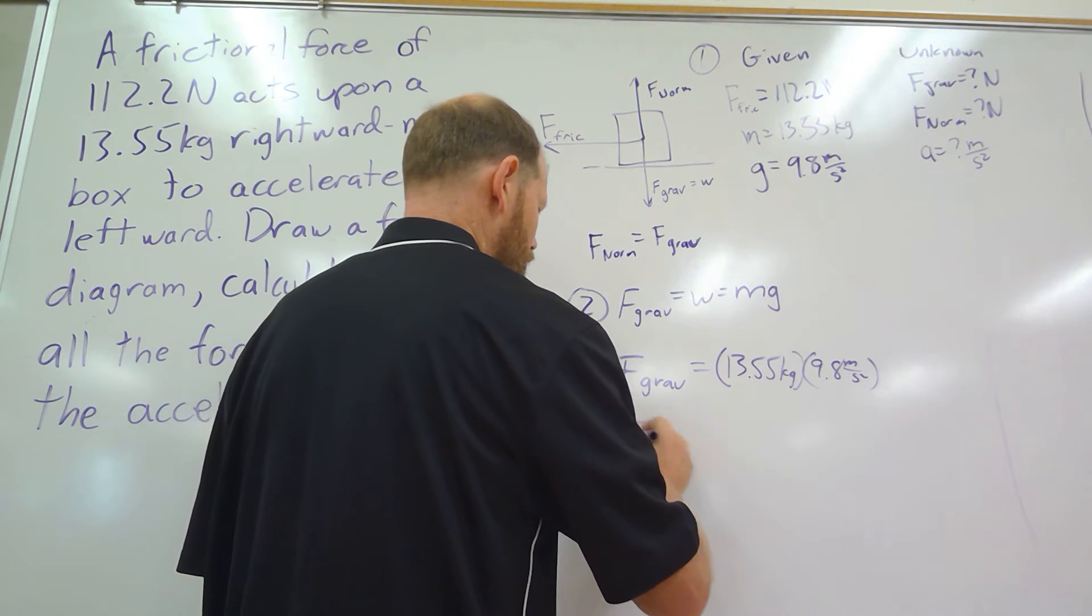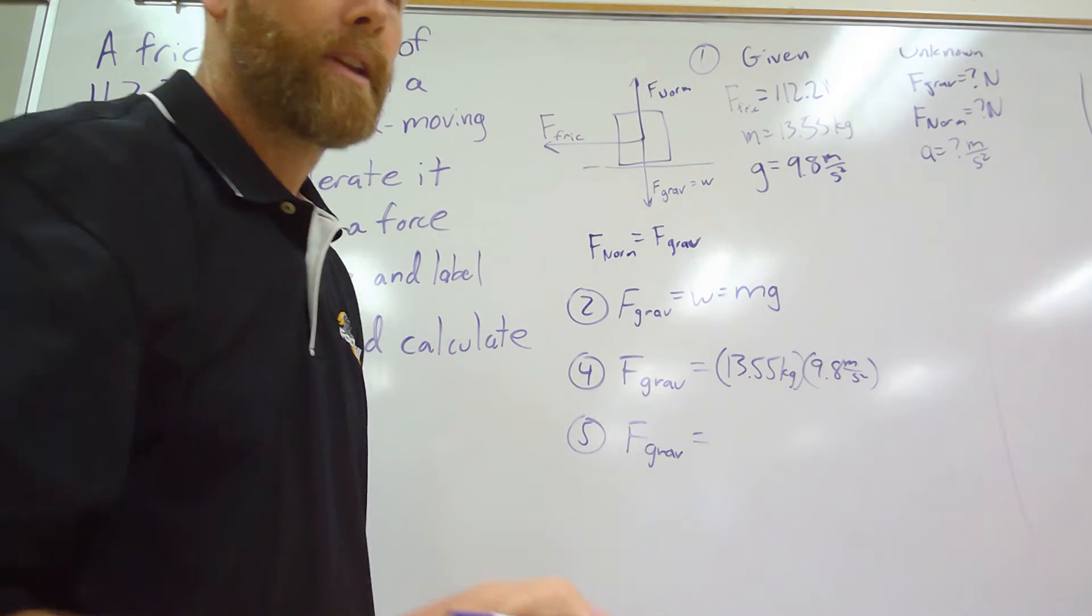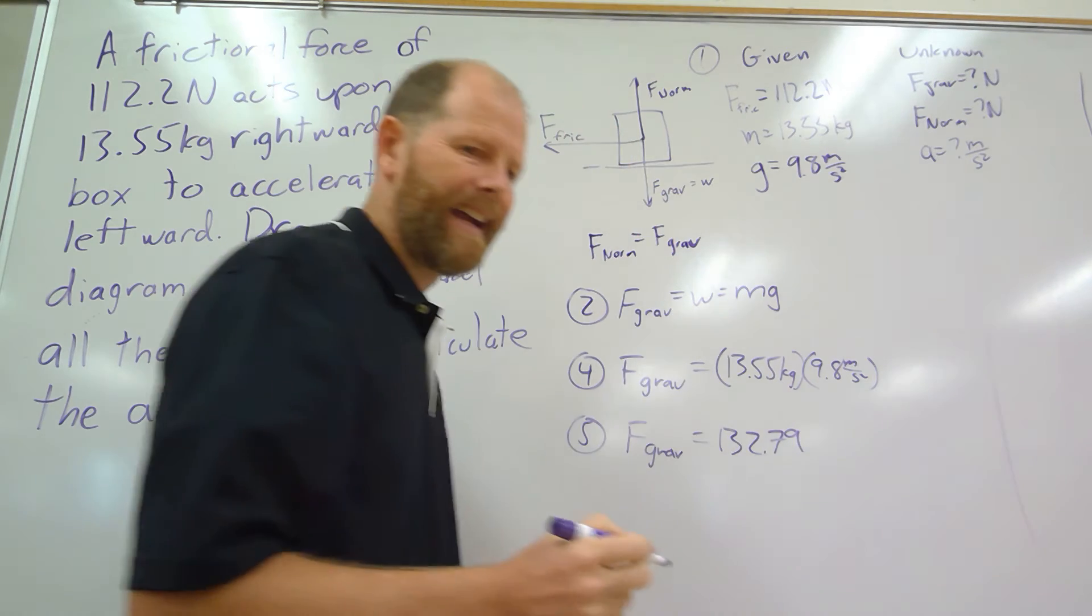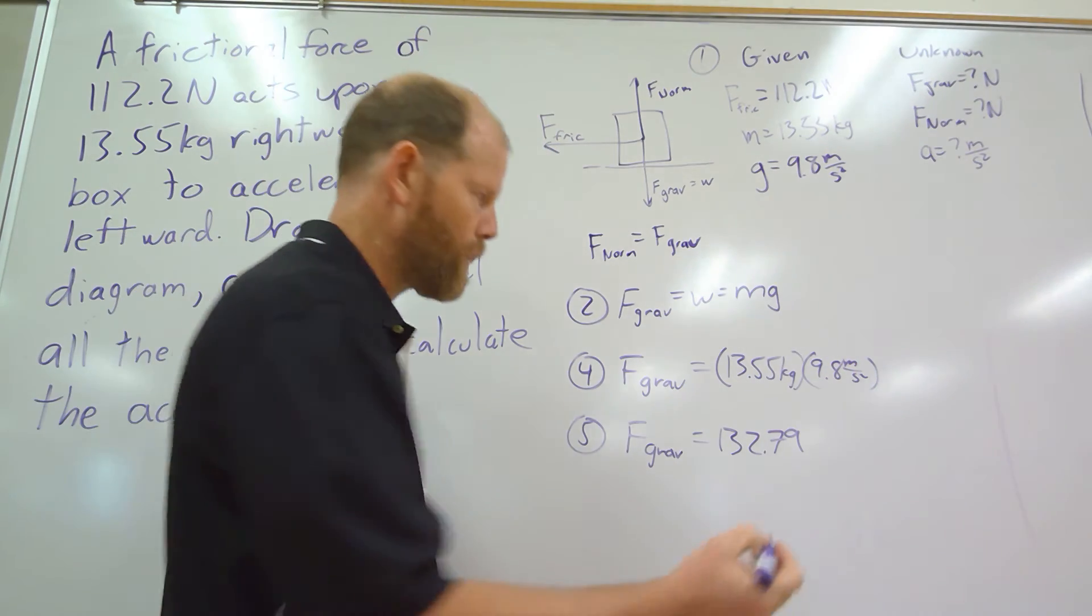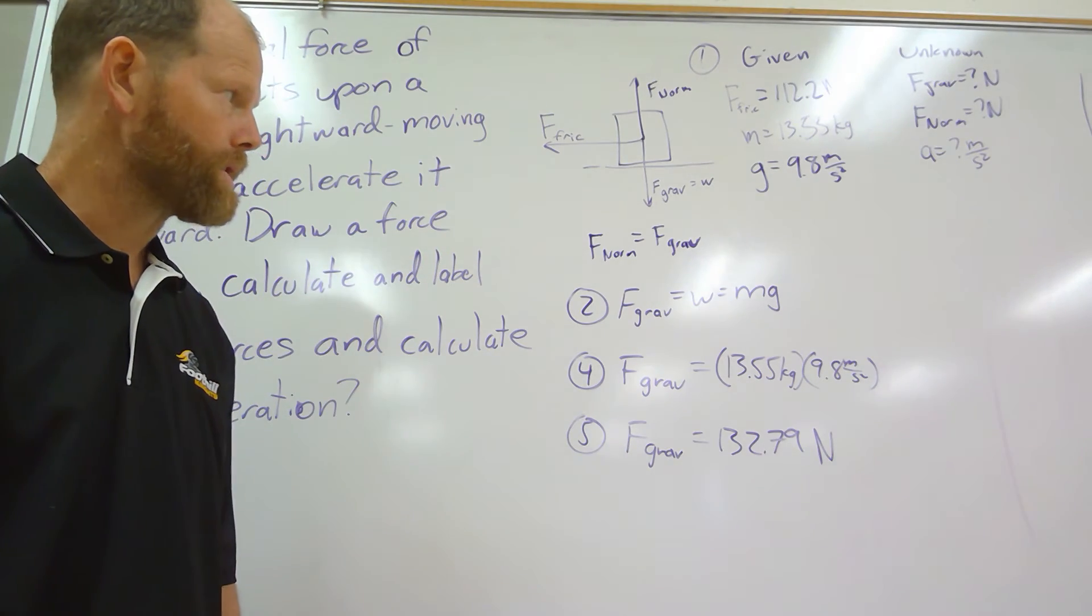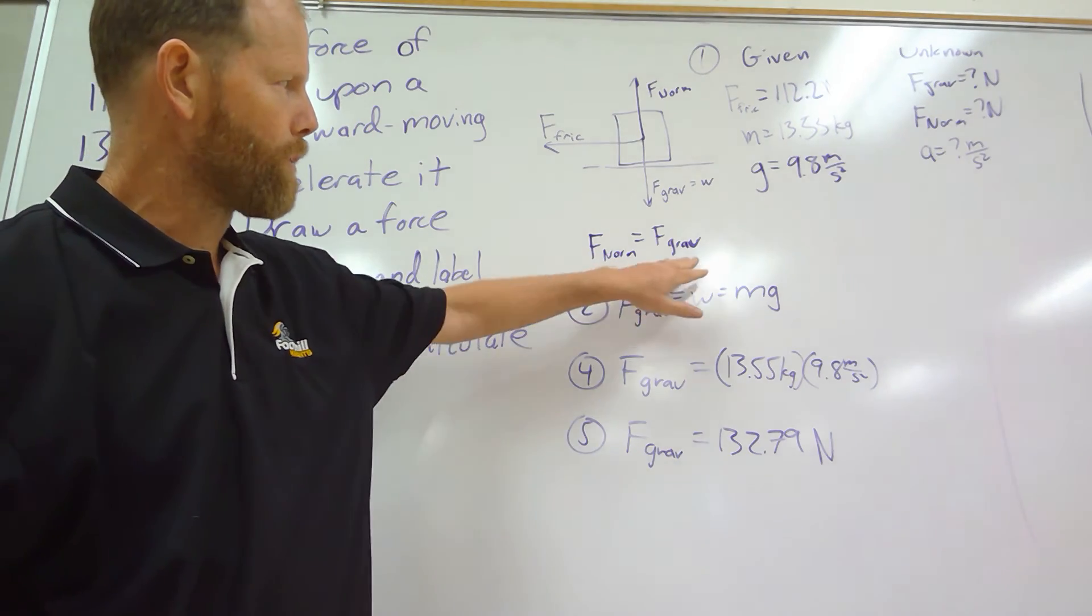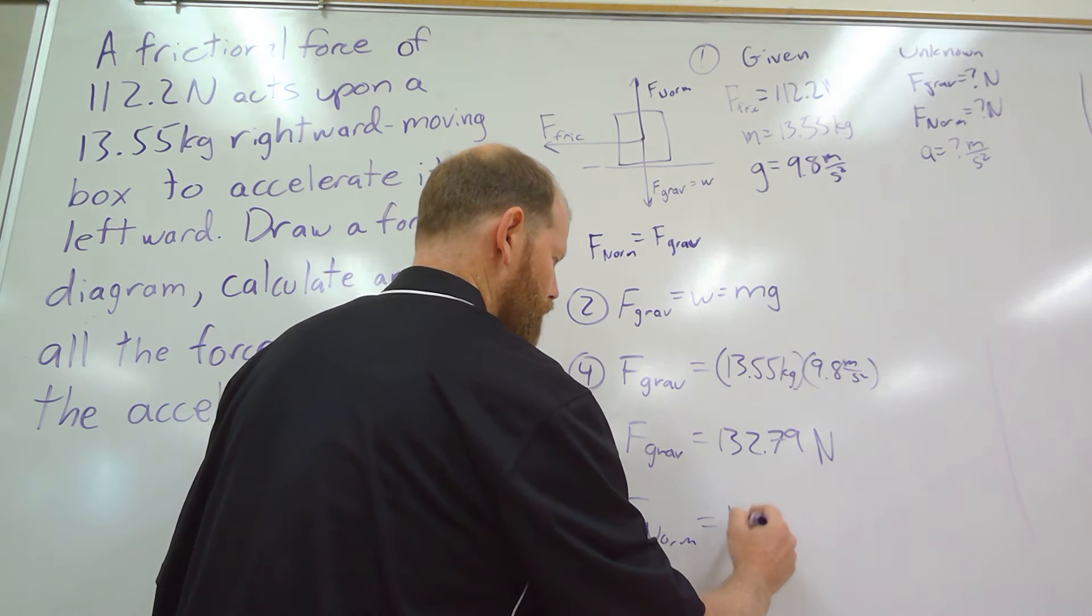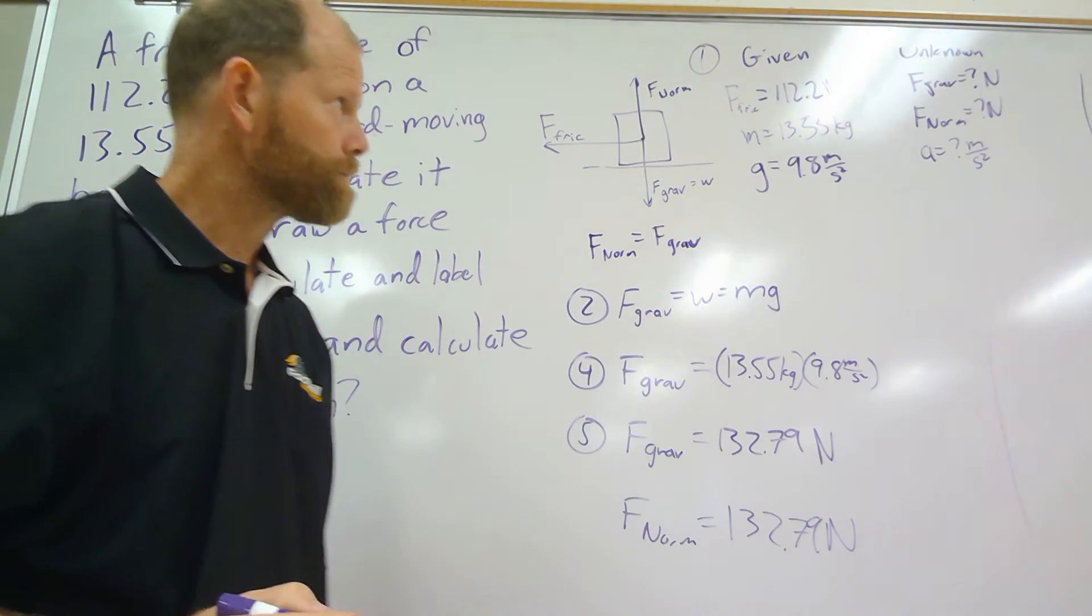So you get out your trusty handy-dandy calculator, or your amazing brain, however you're going to do this multiplication, and you get 132.79. Then we have kilogram meters per second squared; a kilogram meter per second squared is a newton, as we expected for a force. So now we've calculated the force of gravity, and because we know that the normal force is equal to the force of gravity, we can just write that F normal equals 132.79 newtons.